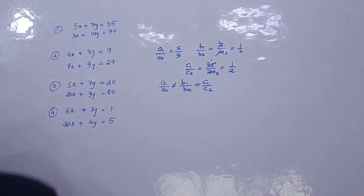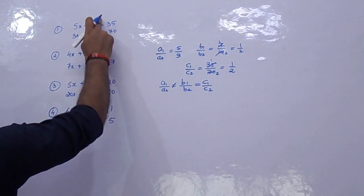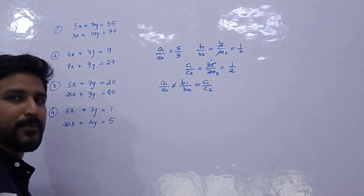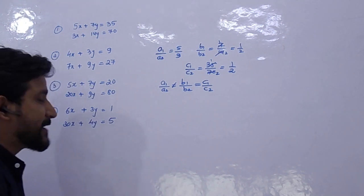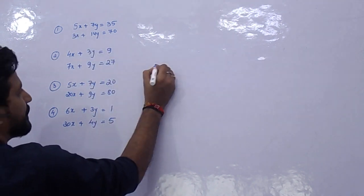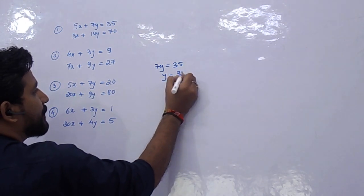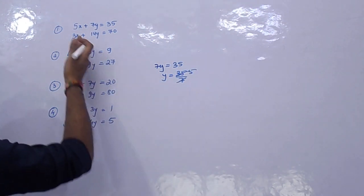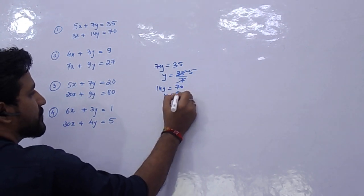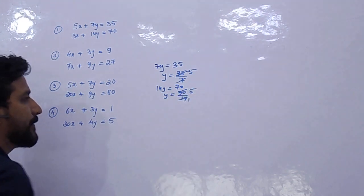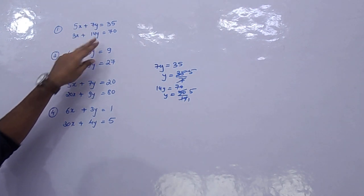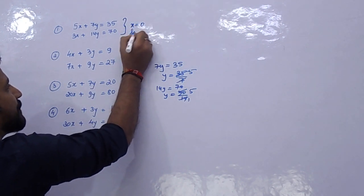The condition to check is: b1 upon b2, the ratio of coefficient of y, equals c1 upon c2, and is not equal to a1 upon a2. In such questions you can directly take x as 0. So if we take x as 0, the first equation becomes 7y equals 35, so y is 35 by 7, which equals 5. In the second equation, 14y equals 70, so y equals 70 by 14, which is also 5. The solution is x equals 0 and y equals 5.